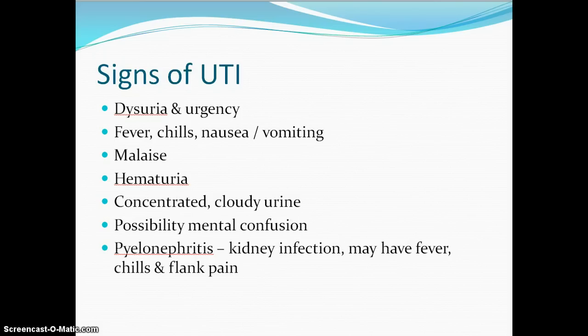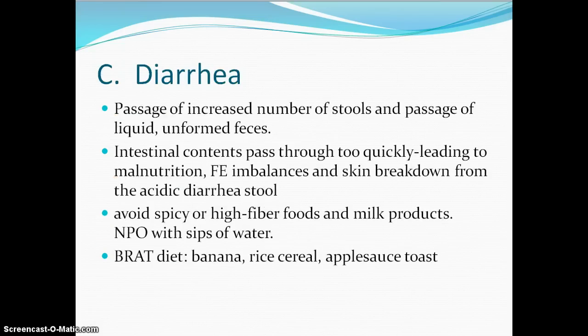On page 1046 these are listed. For any untreated UTI, we know E. coli from the colon is most common. The bacteria in the urine can ascend up to the kidney causing glomerulitis, and if it gets into the bloodstream it would be called urosepsis — all very serious conditions.